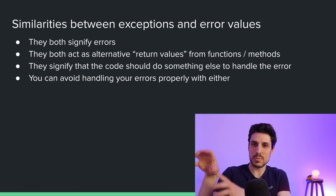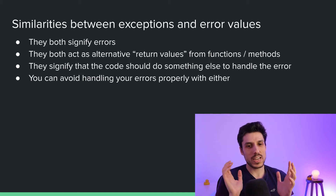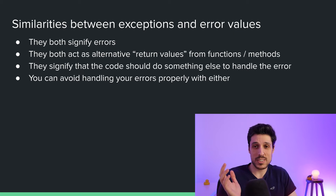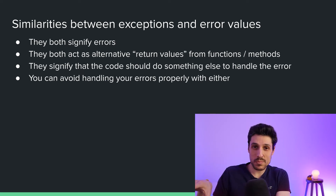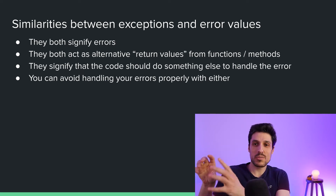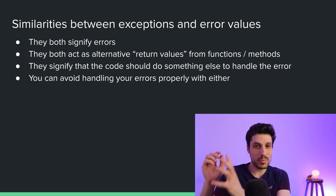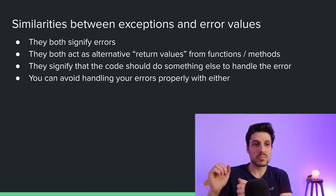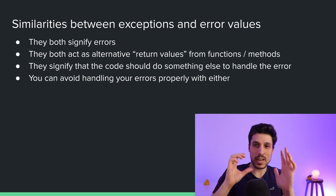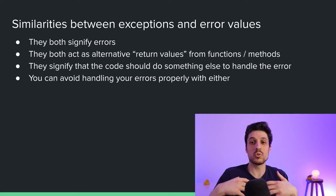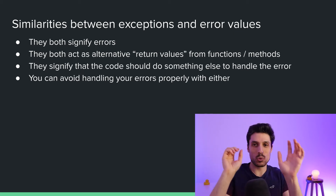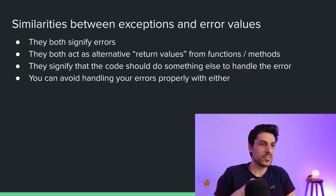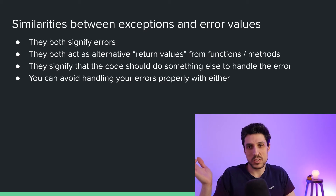All right, so that's some basics on how to use them. Let's talk a bit about their similarities. So essentially, exceptions and error values are extremely similar. Their number one purpose is: if something goes wrong, it's an alternative return value from a function or a method that, whether it's in an if statement or in a catch block, makes the code do something else. That's their entire purpose for existence — something went wrong, do something else. So they both do that just as well.